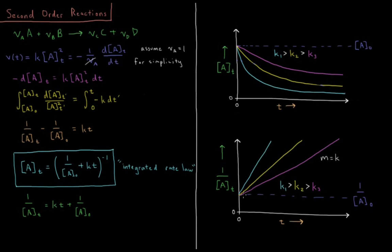So I can not only tell that my reaction is second order, I can actually infer the rate constant from a plot of 1 over A versus T.